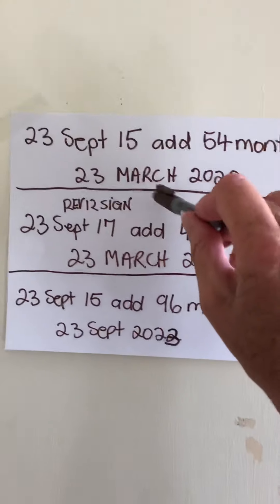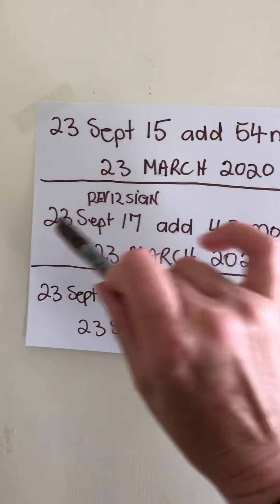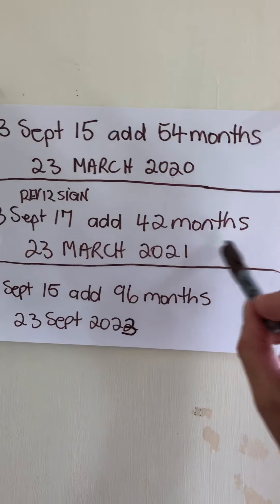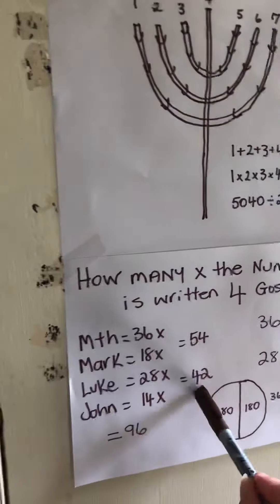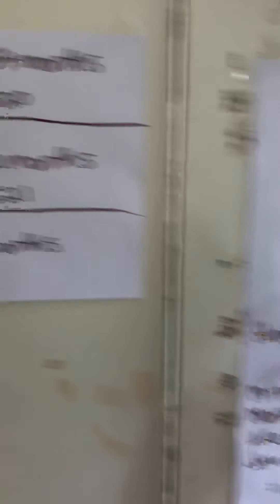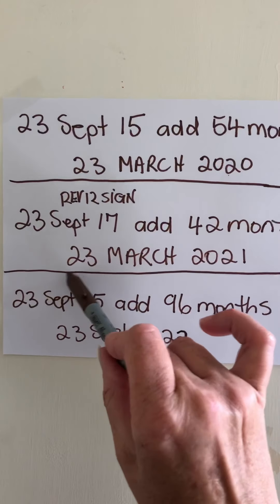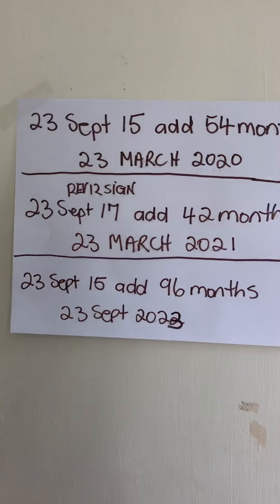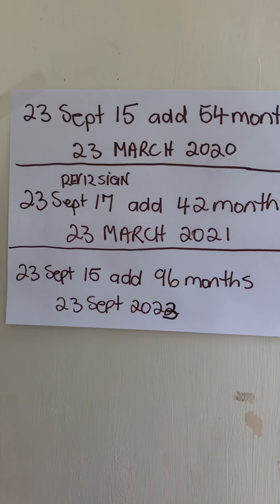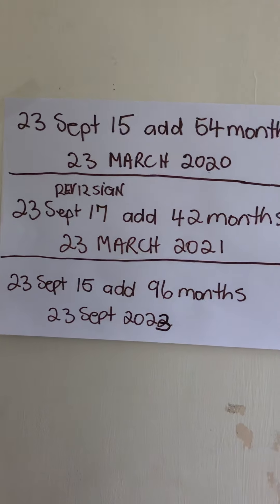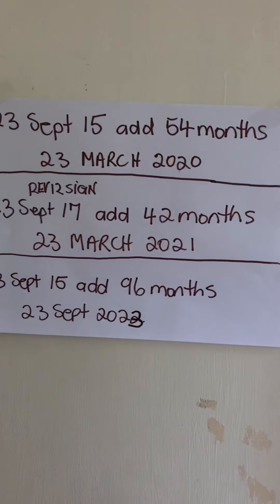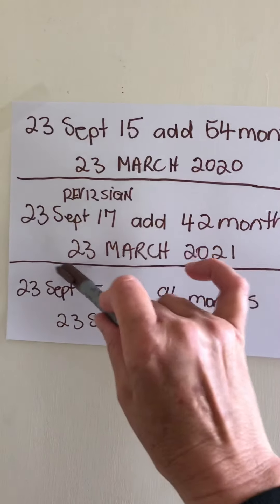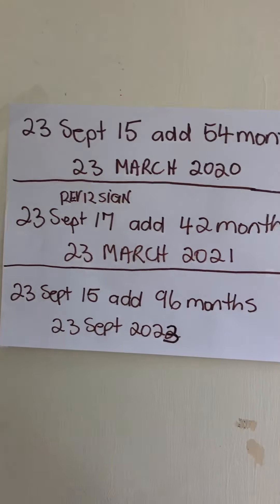From the Revelation 12 sign, which was the 23rd of September 17, add 42 months brings us to the 23rd of March 2021. The 10th of Nisan, this is the day that they have decided to have Israel's elections.